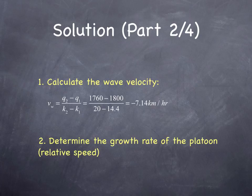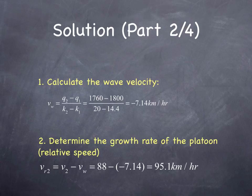Determine the rate of growth of the platoon, which is the relative speed. The relative speed is the difference between the downstream speed and the wave velocity, which was 88 kilometers an hour minus negative 7.14, negative because the wave velocity is in the opposite direction, which gives you 95.1 kilometers per hour, which is the growth rate of the platoon.